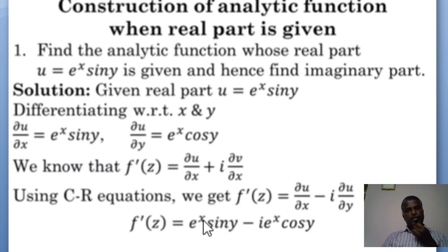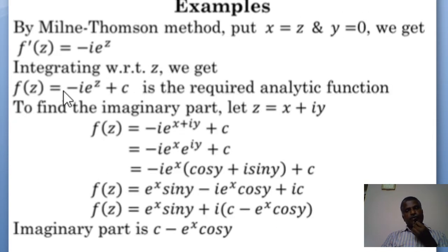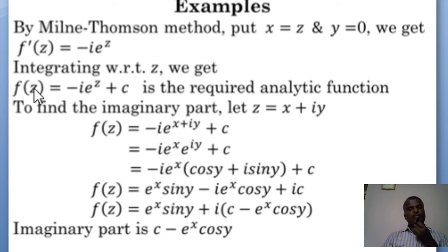Here, putting x = z and y = 0: sin 0 = 0, and e^z cos 0 = e^z, so we have only −i·e^z. On integration, the integral of e^z is e^z plus a constant. Therefore f(z) = −i·e^z + c, which is the required analytic function.